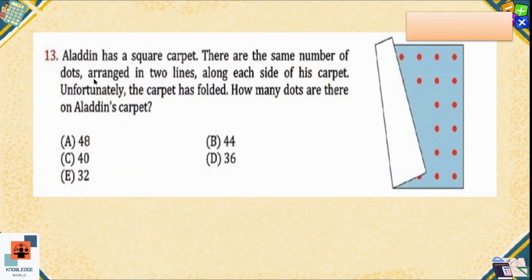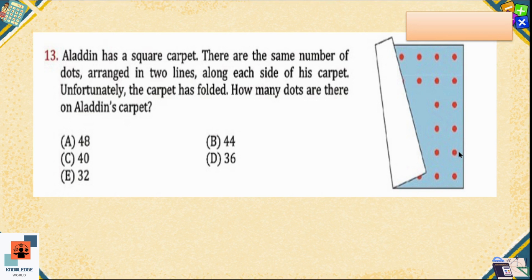Question number 13: Aladdin has a square carpet. There are the same number of dots arranged in two lines along each side of his carpet. Unfortunately, the carpet has folded. How many dots are there on Aladdin's carpet? Since it is a square carpet, the same number of dots are given in each row and column. Let's count the number of dots in the first column: one, two, three, four, five, six.